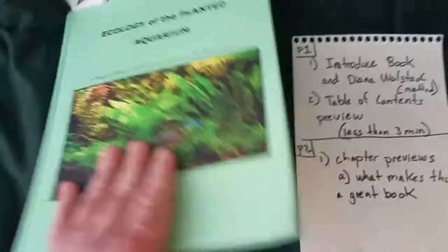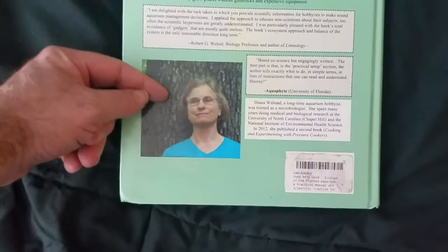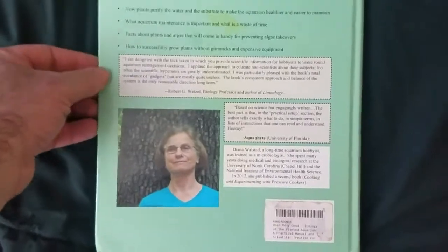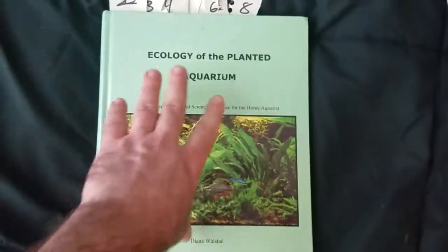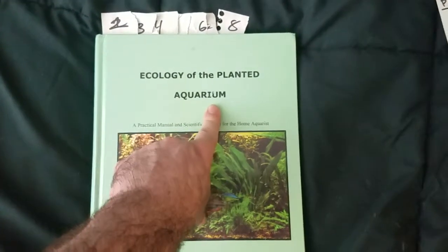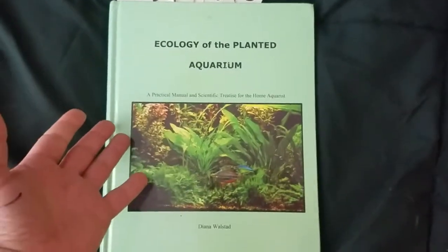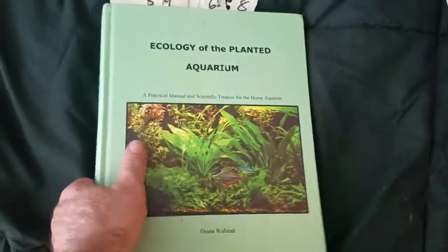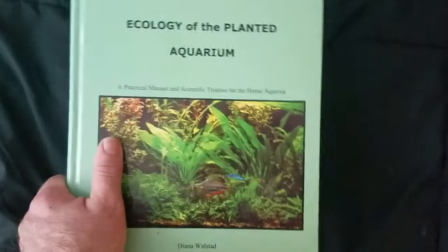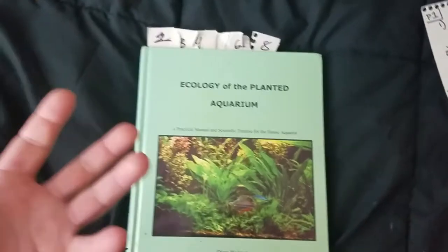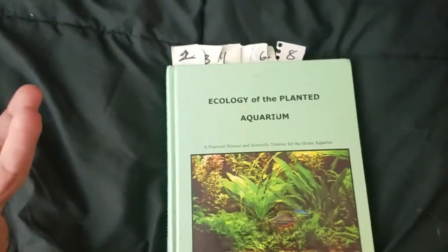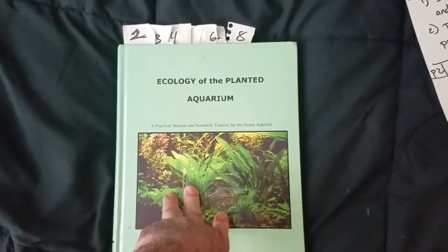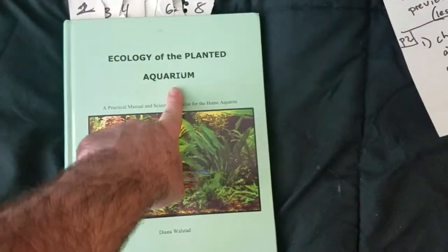So this is the cover, and this is the back. That's Diana Walstad herself — she is an ecologist and a hobbyist of aquariums. She is the founder and creator of the Walstad Method. This book is not about the Walstad Method; it's about ecology and planted aquariums. Although she does describe aspects of the Walstad Method, such as using potting soil as a substrate, this is not a book about the Walstad Method.